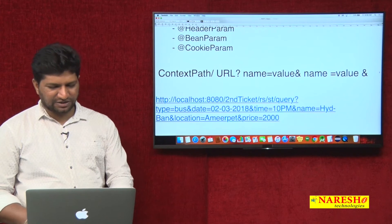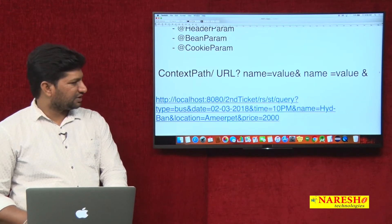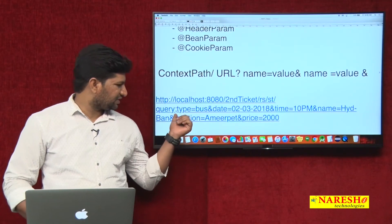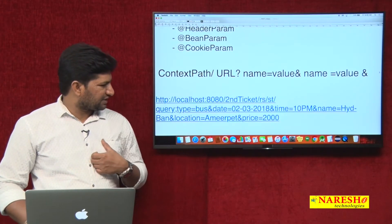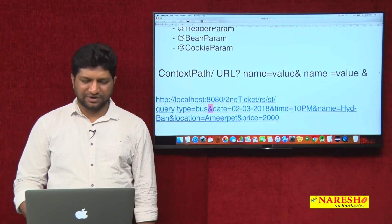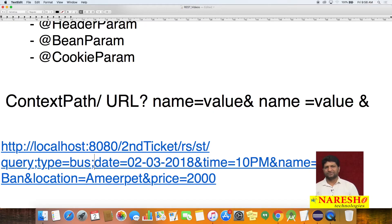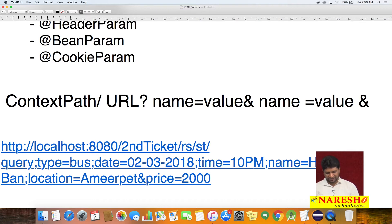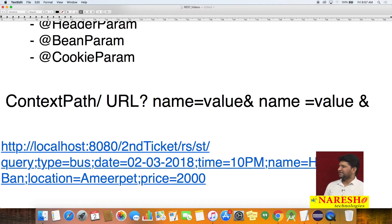In case of matrix parameters, instead of a question mark, we use a semicolon as the starting delimiter. And between parameters, instead of ampersand, we use semicolon as the delimiter.